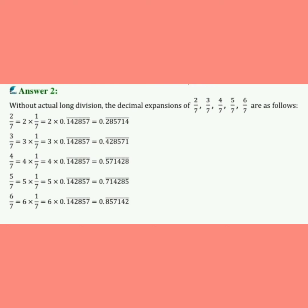अब fourth term: 5/7। 5/7 = 5 × (1/7) = 5 × 0.142857 bar। इसमें 5 का multiply करने पर answer आता है 0.714285 bar।